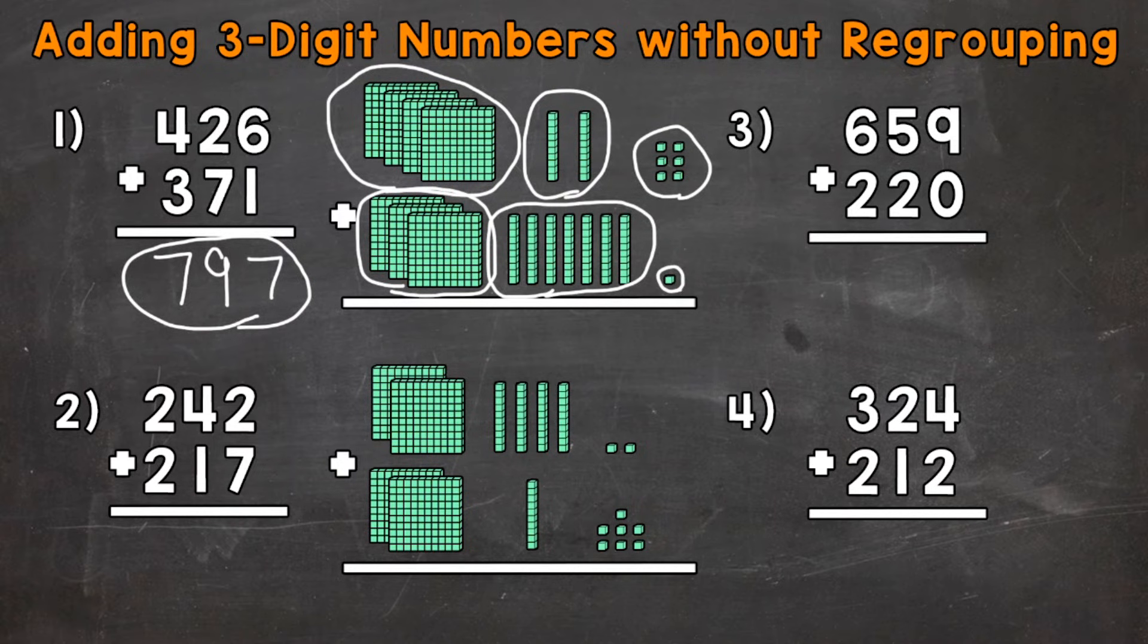Let's move on to number 2, where we have 242 plus 217. Remember, always start with the ones. So 2 ones plus 7 ones gives us a total of 9 ones. So we have a 9 in the ones place.